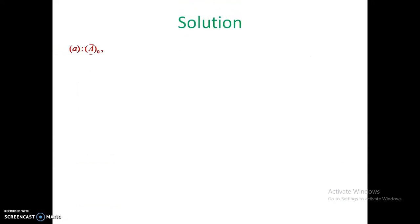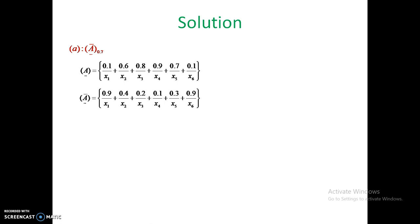Solution for Ā of 0.7: A = 0.1/x1 + 0.6/x2 + 0.8/x3 + 0.9/x4 + 0.7/x5 + 0.1/x6. The complement means subtracting each value from 1. So x1: 1−0.1 = 0.9; x2: 1−0.6 = 0.4; x3: 1−0.8 = 0.2; x4: 1−0.9 = 0.1.